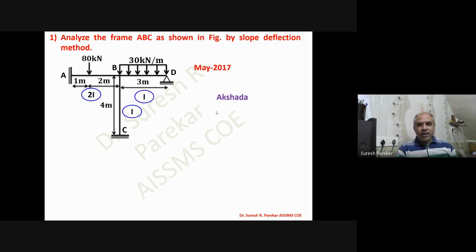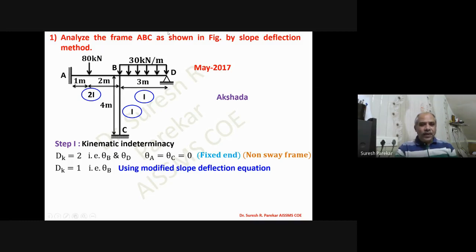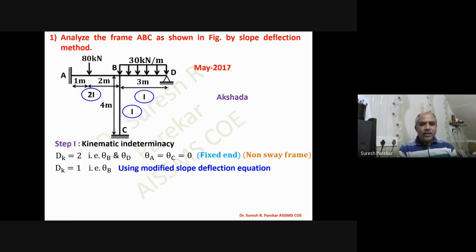We have to analyze this problem by the slope deflection method. The kinematic indeterminacy gives us two unknowns: theta_B and theta_D. But if we use the modified slope deflection equation, then it becomes one. The frame is a non-sway frame because we have a fixed support or simple support to the beam, and therefore we do not have sway.